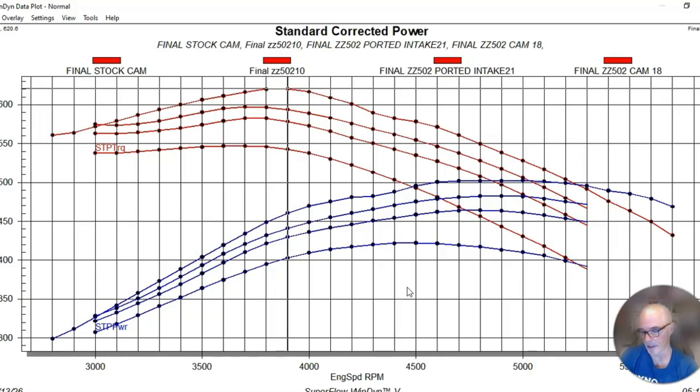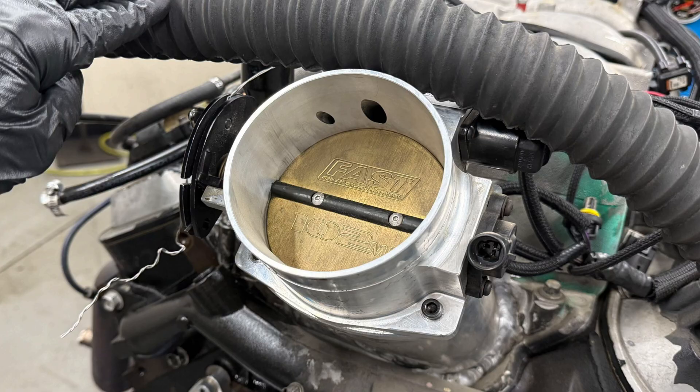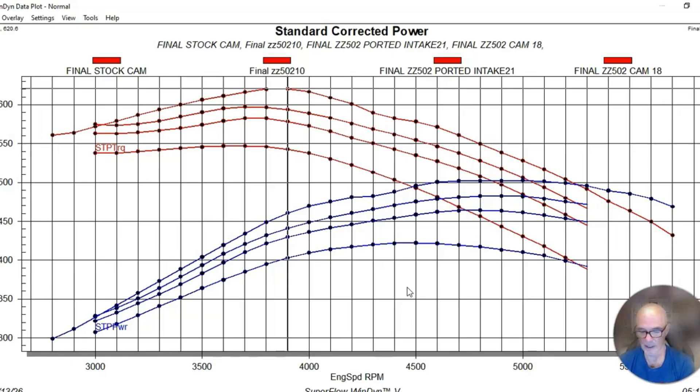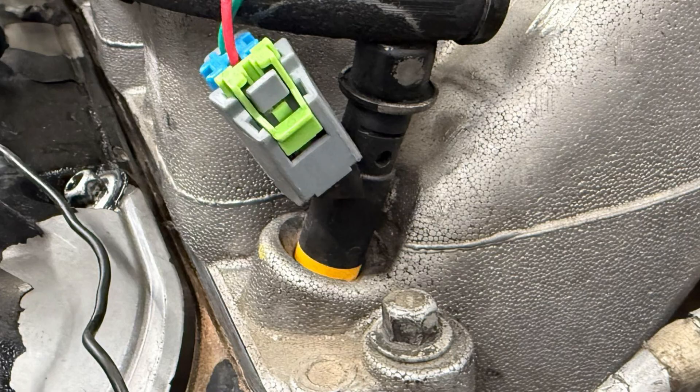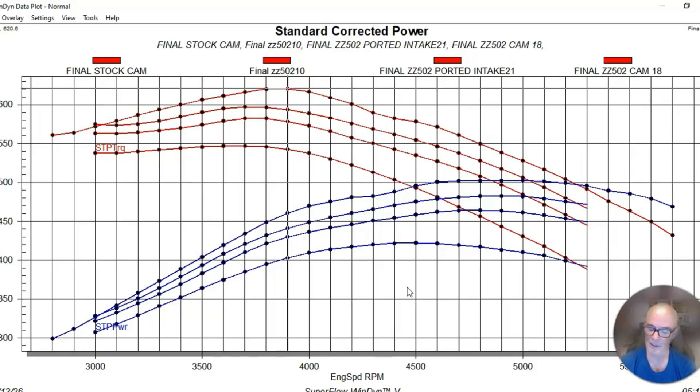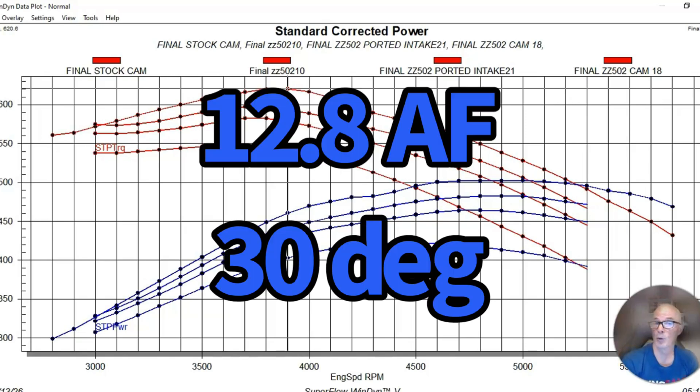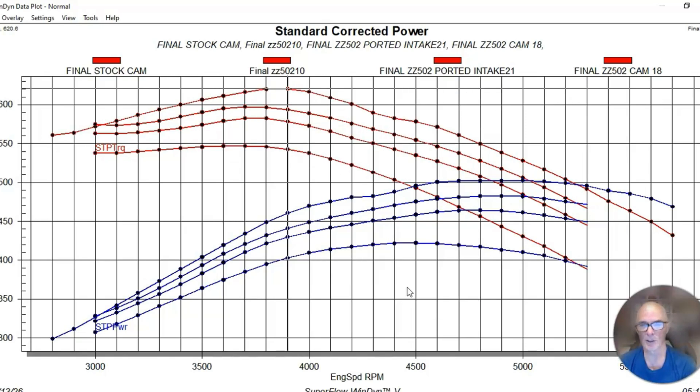The three things that we did change on this: when we ran it previously when it made 482, we had a smaller 90 millimeter throttle body on it. This time, because the opening in this ported manifold is designed to accept a 102 millimeter throttle body, I installed a 102 millimeter throttle body. The other thing I did is before we ran this with a set of 80 pound injectors, and I didn't have those, so I installed a set of Dodge Hemi injectors which have a projected pintle tip on them.